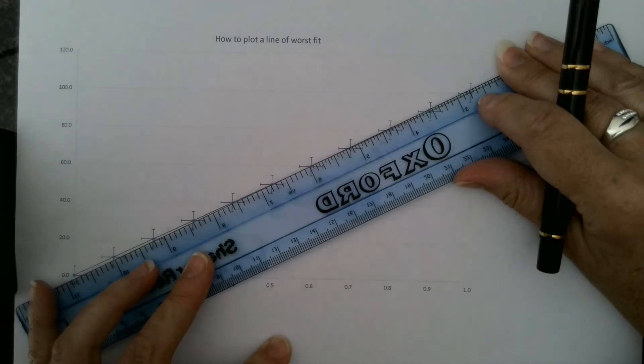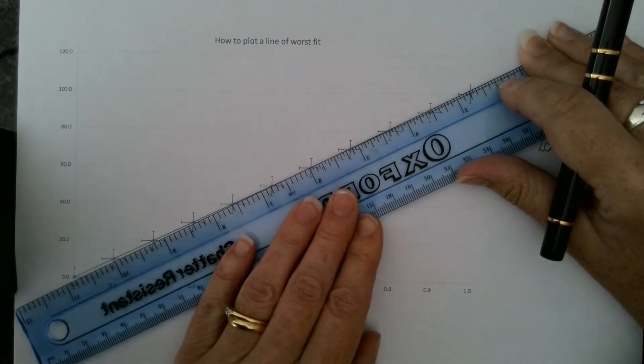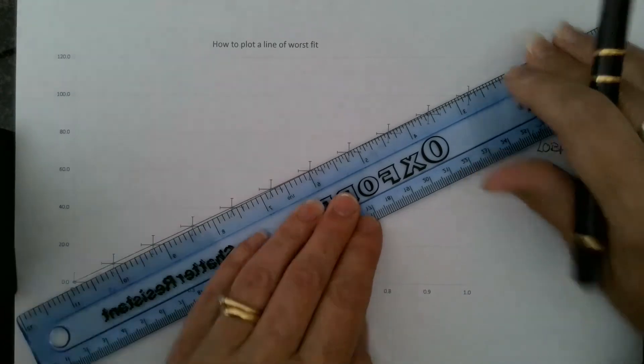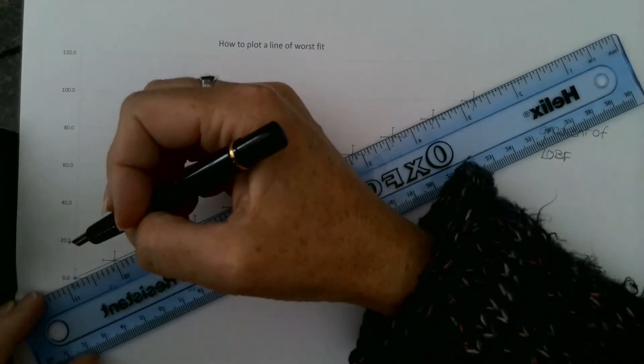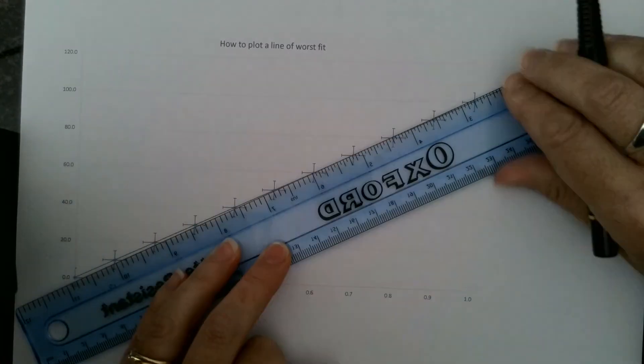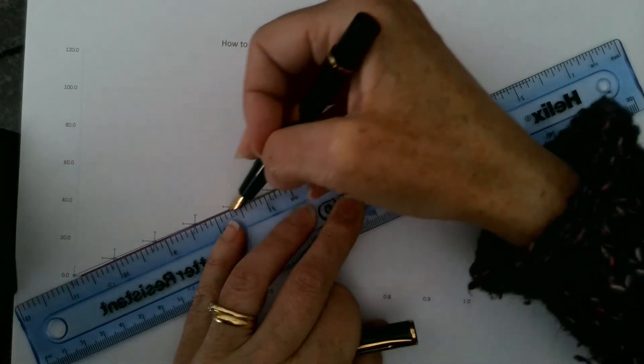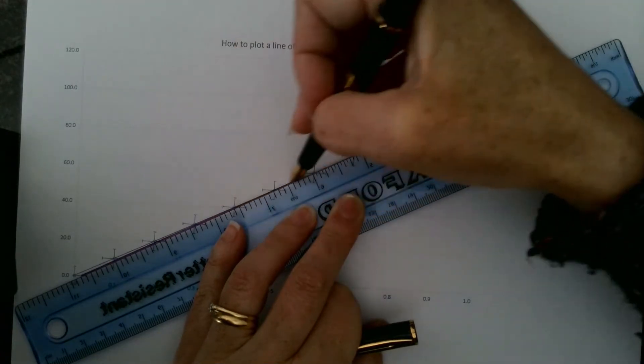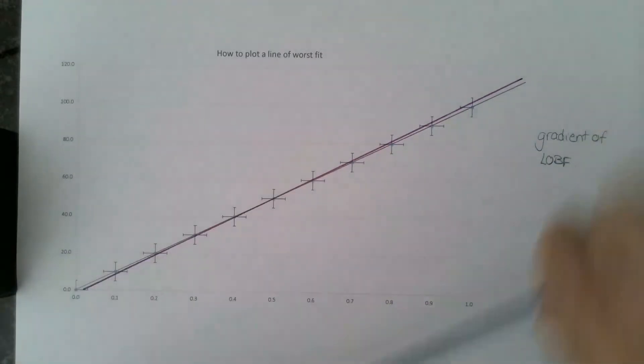I'm quite limited with my X error bars as well as my Y error bars. I need to make sure that my line of worst fit is going to go through all of them without cutting through in the wrong place. It's quite tricky. So here we go, I will draw in my line of worst fit. I've done mine nice and thick so you can see it. You would do yours with a really sharp pencil.